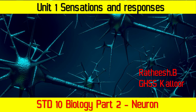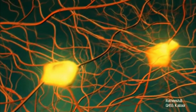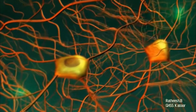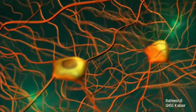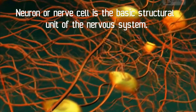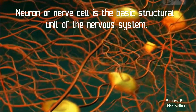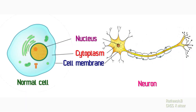In the last video, we learned that the nervous system controls and coordinates various body activities. In this video, we can discuss the basic unit of the system. Neuron, or nerve cell, is the basic structural unit of the nervous system. You already learned the structure of a typical animal cell and also observed the structure of a nervous cell or neuron.